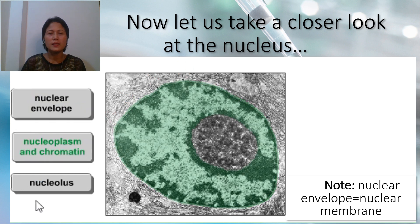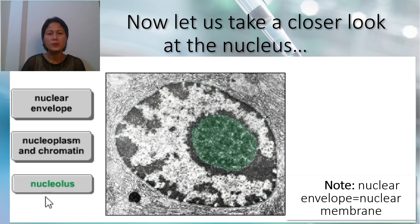Nucleoplasm is the gelatinous substance within the nuclear envelope, also called karyoplasm. This semi-fluid material is similar to cytoplasm and is composed mainly of water with dissolved salts, enzymes, and organic molecules suspended within. The nucleolus is a dense, membrane-less structure composed of RNA and proteins. Some eukaryotic organisms have a nucleus that contains up to four nucleoli.